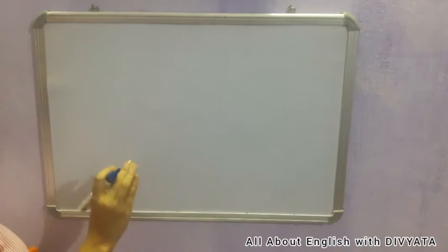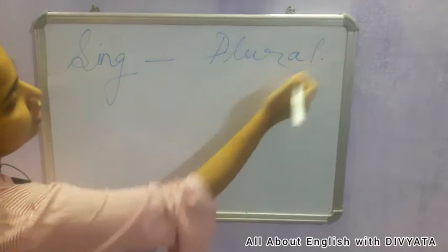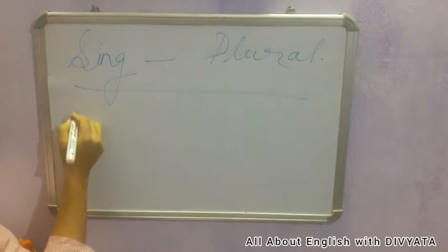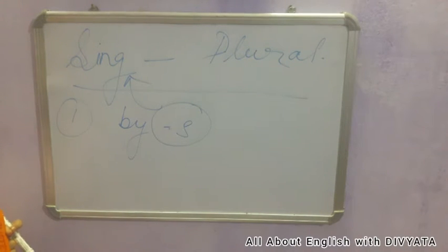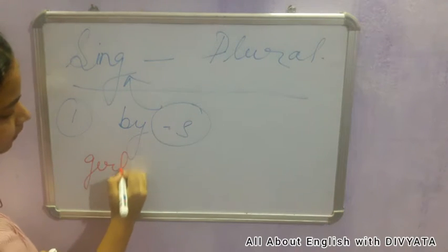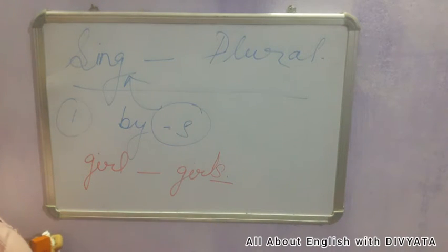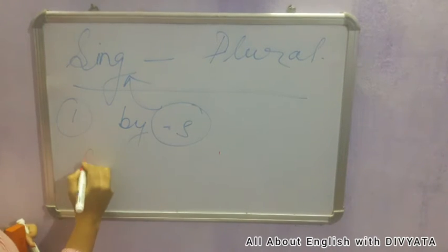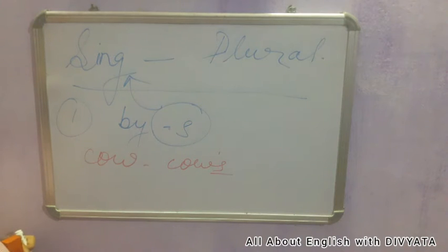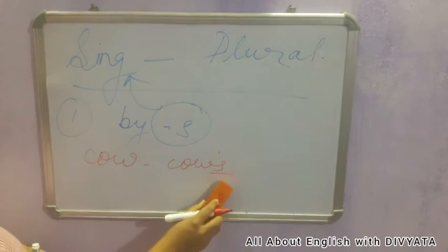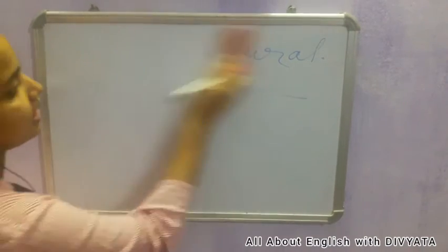There are many ways by which we form plural nouns from singular nouns. Let's see them one by one. The first rule is by adding 's' to the singular noun. For example, girl becomes girls — I just added 's'. Another example: cow becomes cows — just added 's' at the end. So cow is the singular noun and cows is the plural noun.